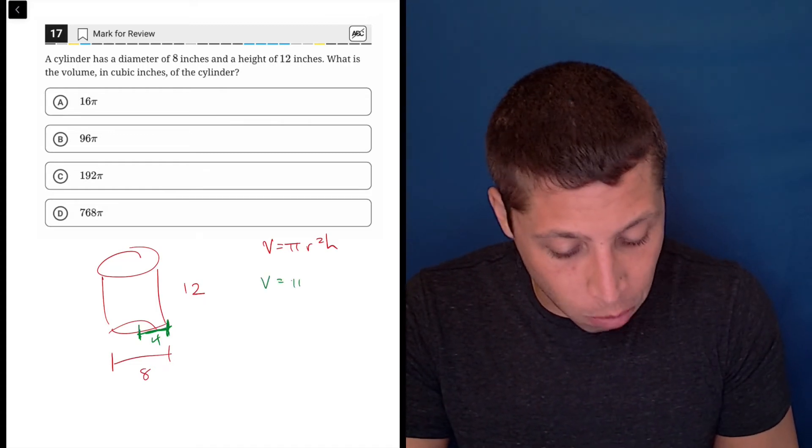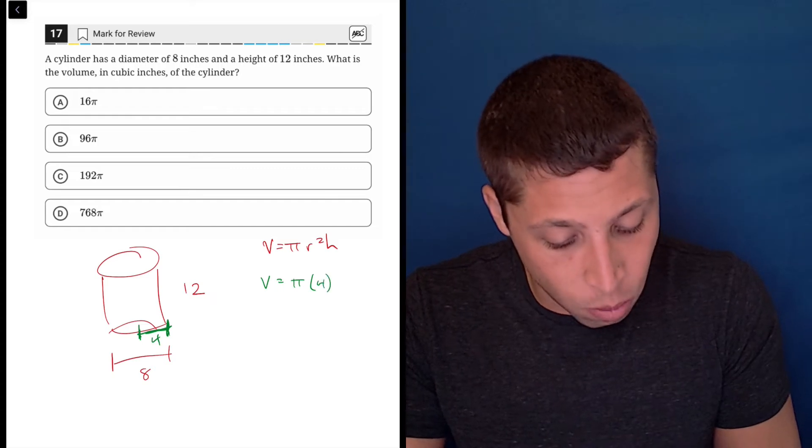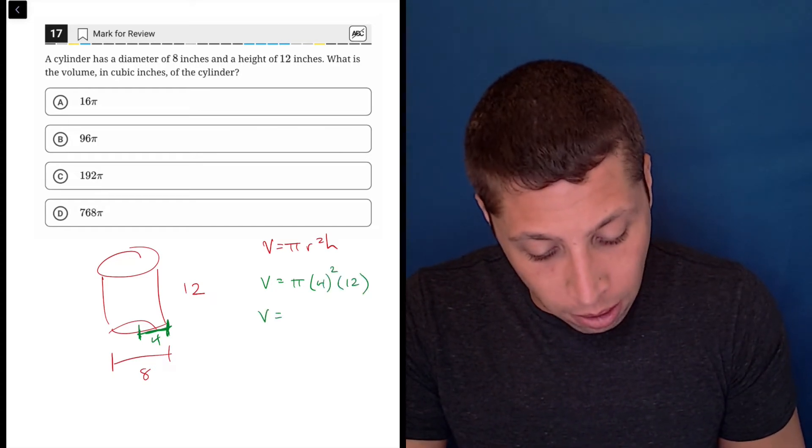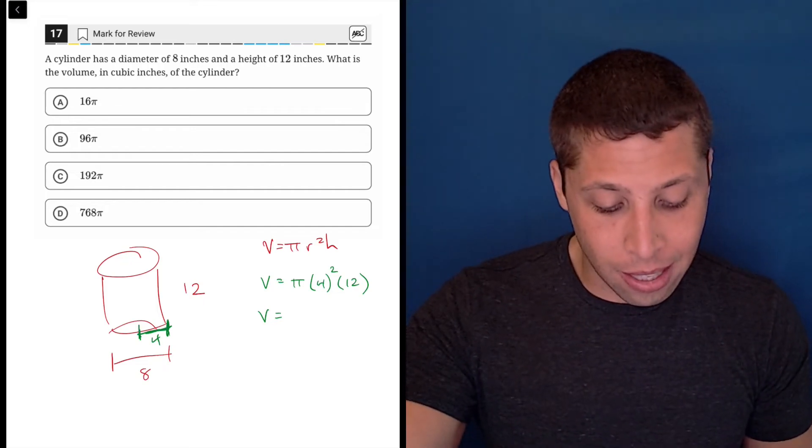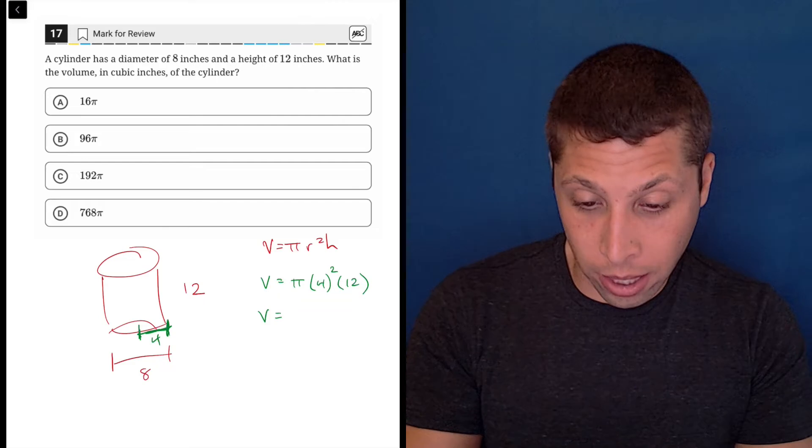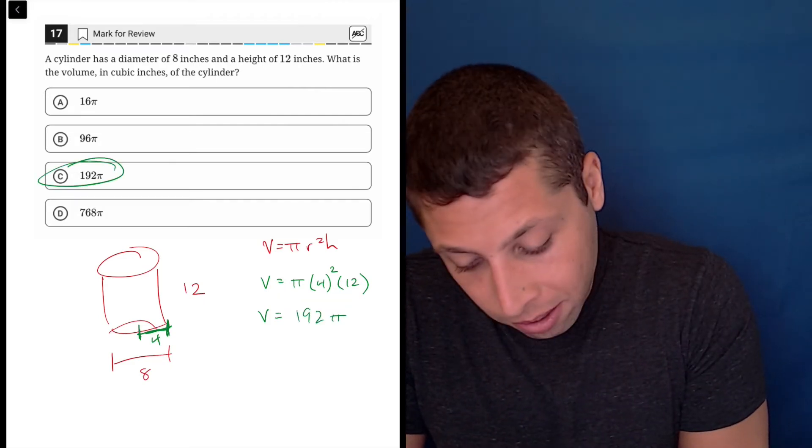So if they want the volume, now we just plug points into equations. We have r is 4 and 12 for the height, so that's going to be 16 times 12, which I don't know in my head, but I assume is 192. Yes, it is choice C.